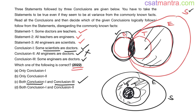We can answer this question with just one possibility, because 'some scientists are doctors' and 'some engineers are doctors' are not going to change with any other possibility. So the answer is conclusion one and conclusion three.